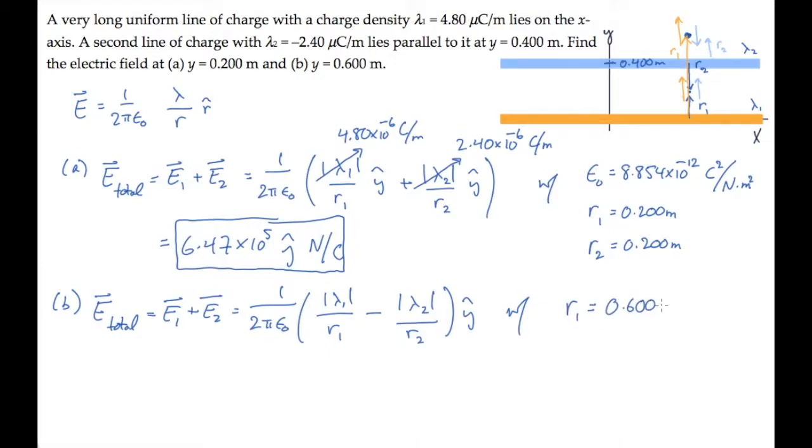When you substitute the values for r1 and r2 and calculate, you find this value for the electric field. The negative y hat tells us that it is directed in the negative y direction.